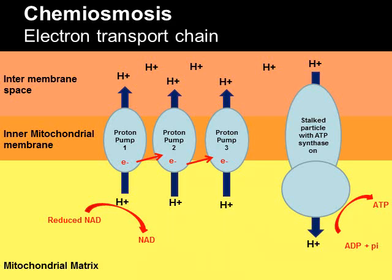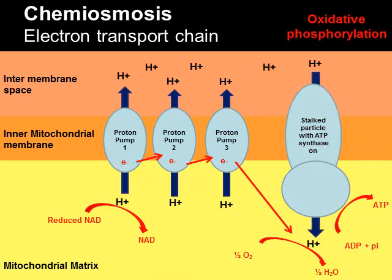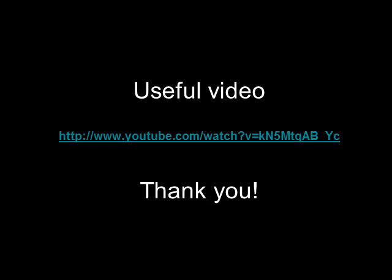The hydrogen that has passed through the stalked particle and the electron from the third proton pump come together with an oxygen molecule and make water. The proton pumps can be described as electron acceptors, so our final — or terminal — electron acceptor is oxygen. The whole process is totally reliant on oxygen; hence aerobic respiration — if there's no oxygen to pick up the electrons at the end, the whole chain cannot work.